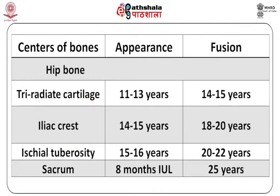For the hip bone, the tri-radiate cartilage center of ossification appears at around 11 to 13 years and fuses at 14 to 15 years. The iliac crest appears at around 14 to 15 years and fuses at 18 to 20 years. The ischial tuberosity appears at 15 to 16 years and fuses at 20 to 22 years. The sacrum center of ossification appears at eight months of intrauterine life, and all five segments fuse with each other by the end of 25 years.